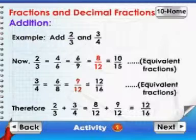Addition example: add 2 by 3 and 3 by 4. Now, 2 by 3 is equal to 4 by 6 is equal to 6 by 9 is equal to 8 by 12 is equal to 10 by 15. 3 by 4 is equal to 6 by 8 is equal to 9 by 12 is equal to 12 by 16.